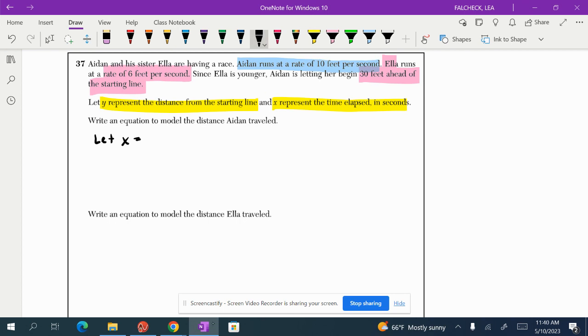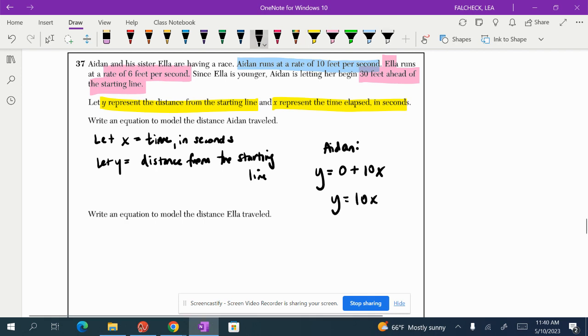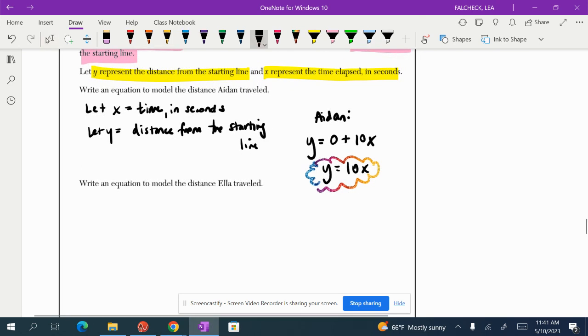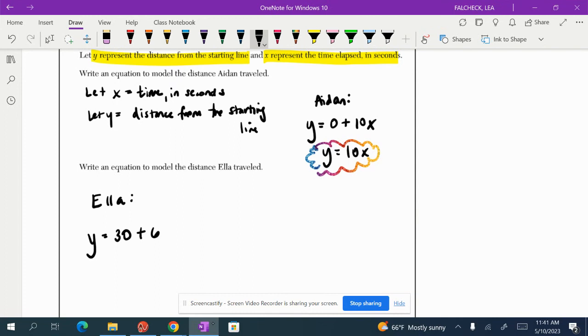So let x equal time in seconds and let y equal distance from the starting line. Okay, so for Aiden, his distance from the starting line starts at zero and then he moves at 10 feet per second. So his equation is going to be y equals 10x. Now write an equation to model the distance Ella traveled. So Ella's distance from the starting line can be modeled by the 30 feet up that she started with and a speed of 6 feet per second.